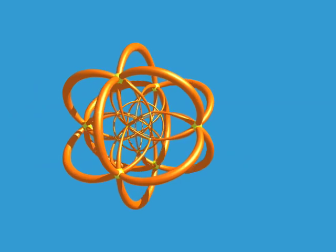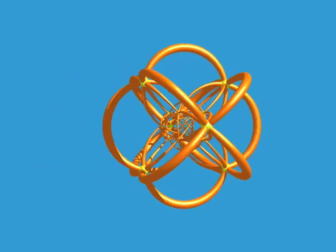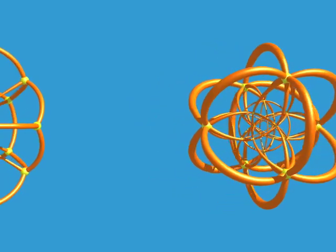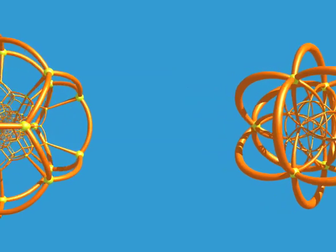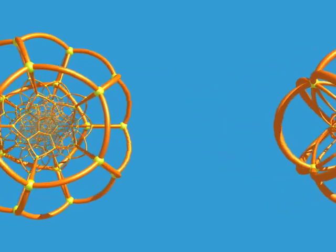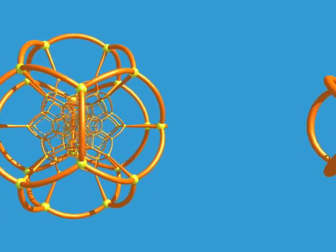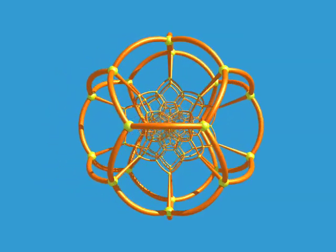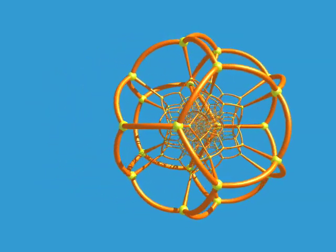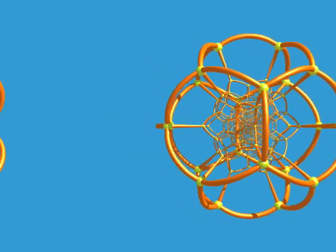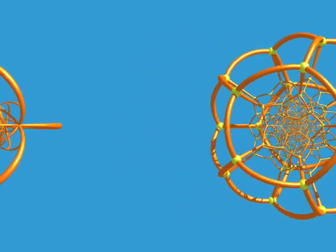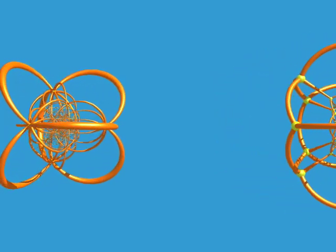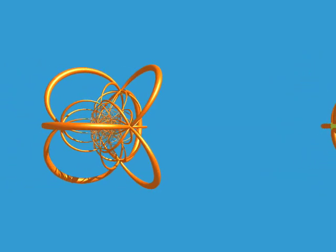Here's the 24 cell, with 24 vertices and 96 edges. Finally, the 120 cell. And the 600 cell.